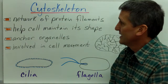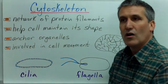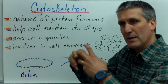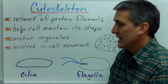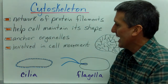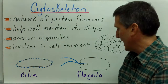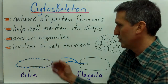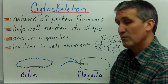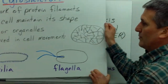The cytoskeleton is next. This is a network of protein filaments running throughout the cytoplasm. It helps the cell maintain its shape, because the cell membrane is a flexible membrane. It's also a place that can anchor organelles, and it's involved in cell movement by being part of cilia and flagella, which are two protein filament structures that allow cells to move and be motile.